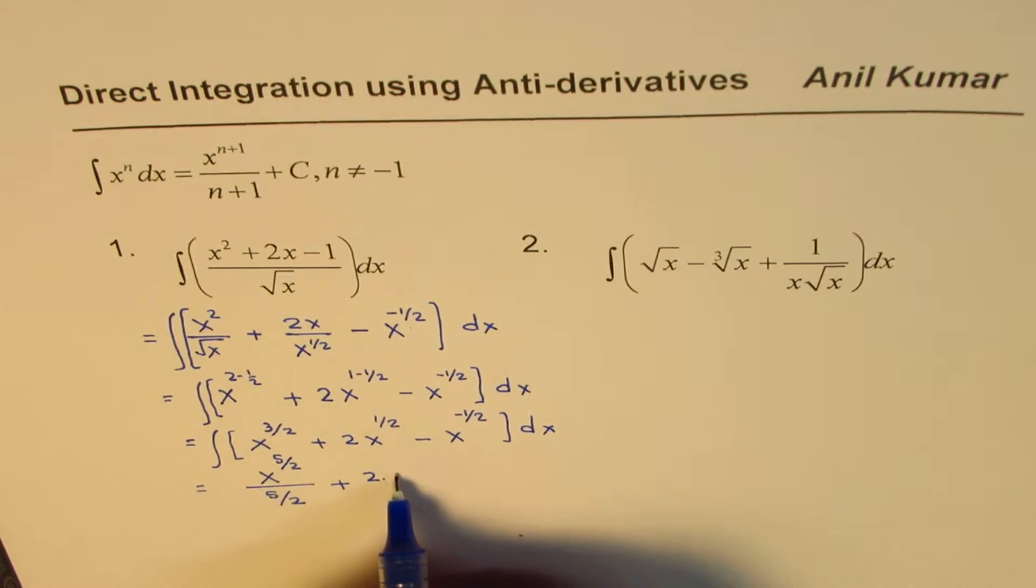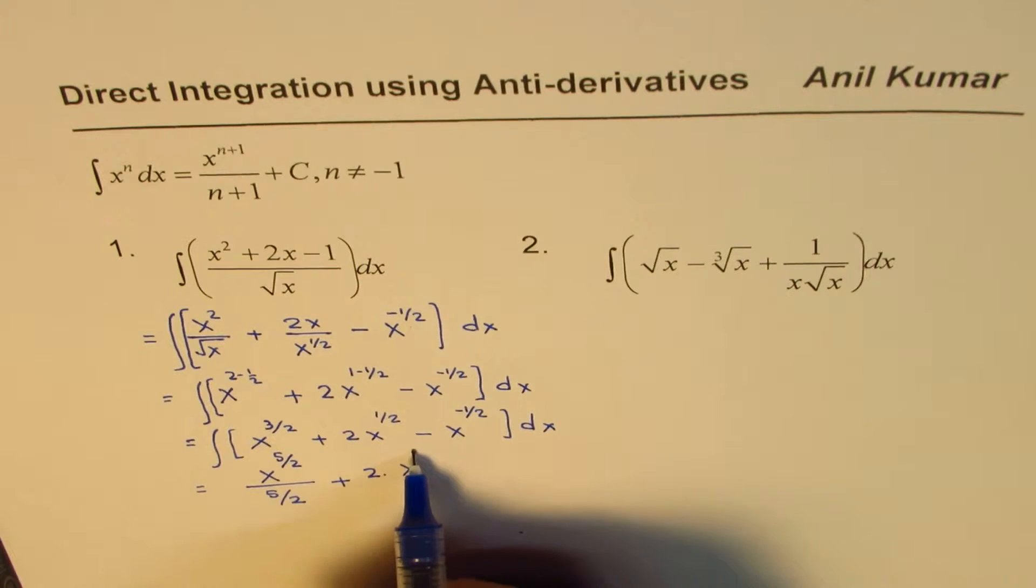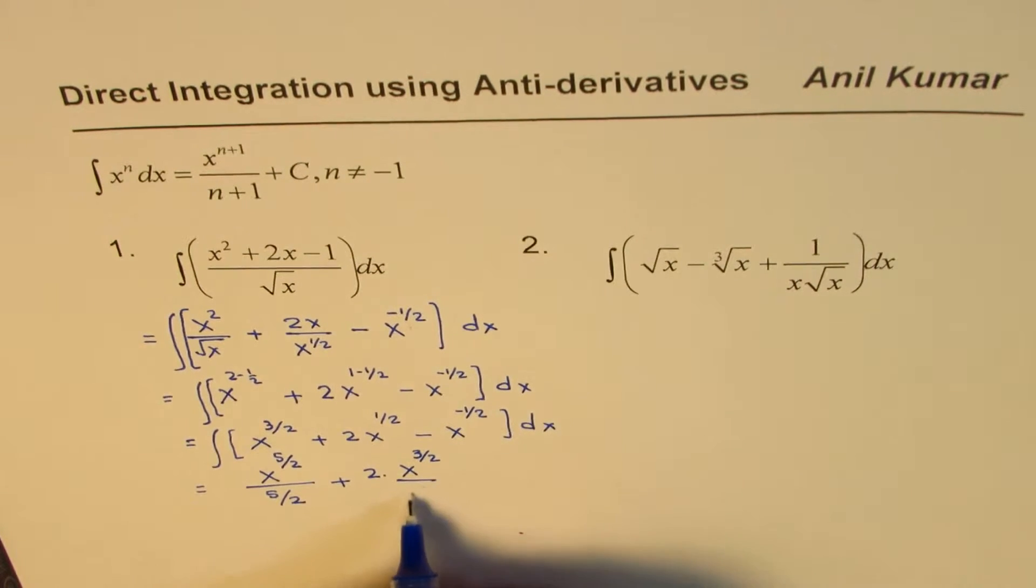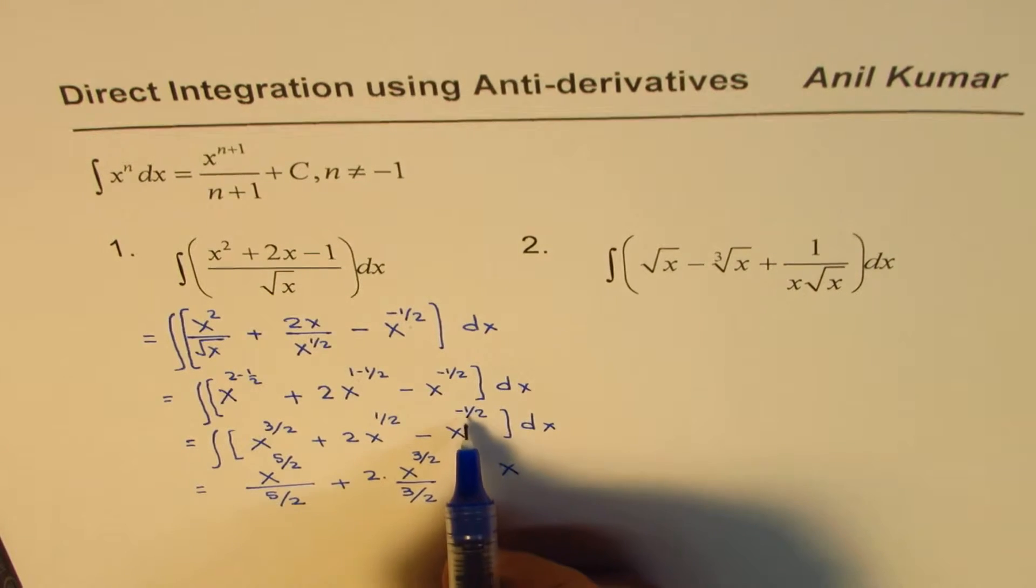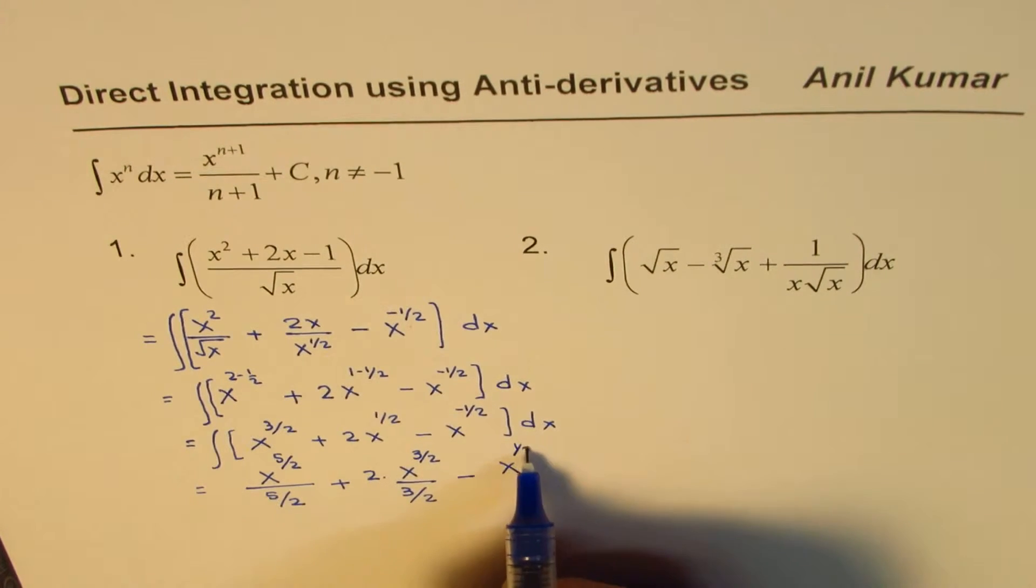So x to the power of half plus 1, 3 by 2, divided by 3 by 2, minus x to the power of minus 1 plus 1, so x to the power of half, divided by half.